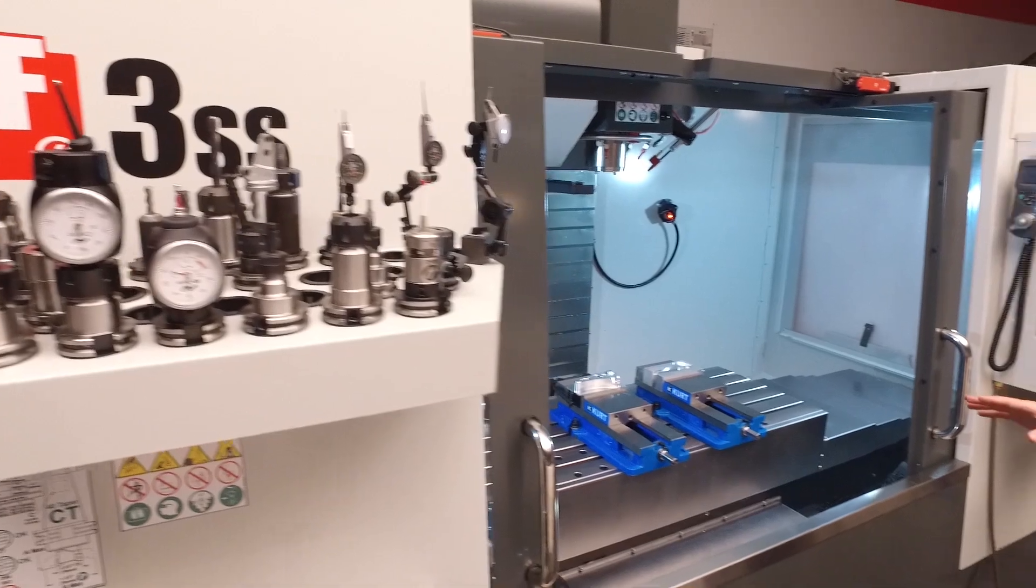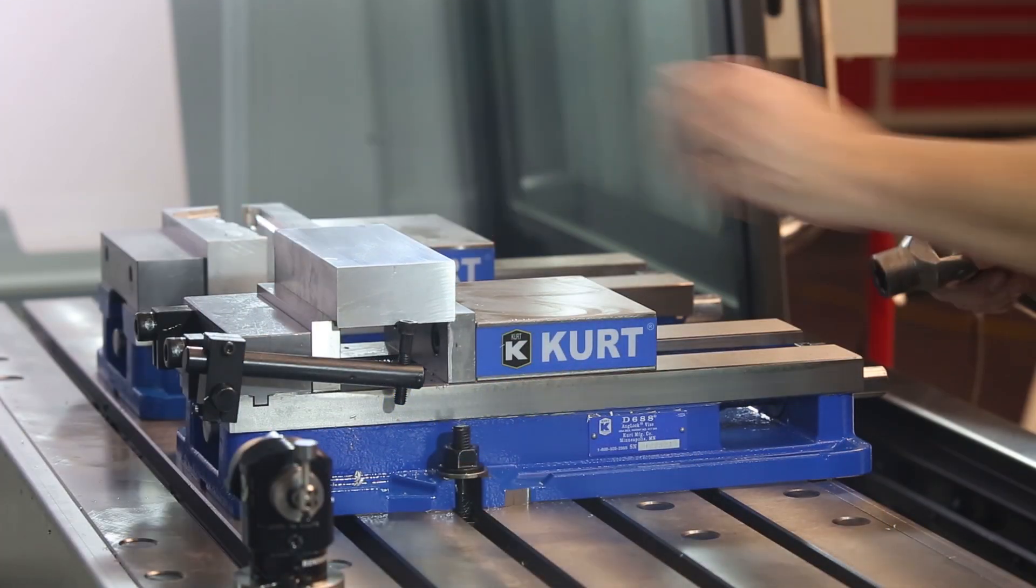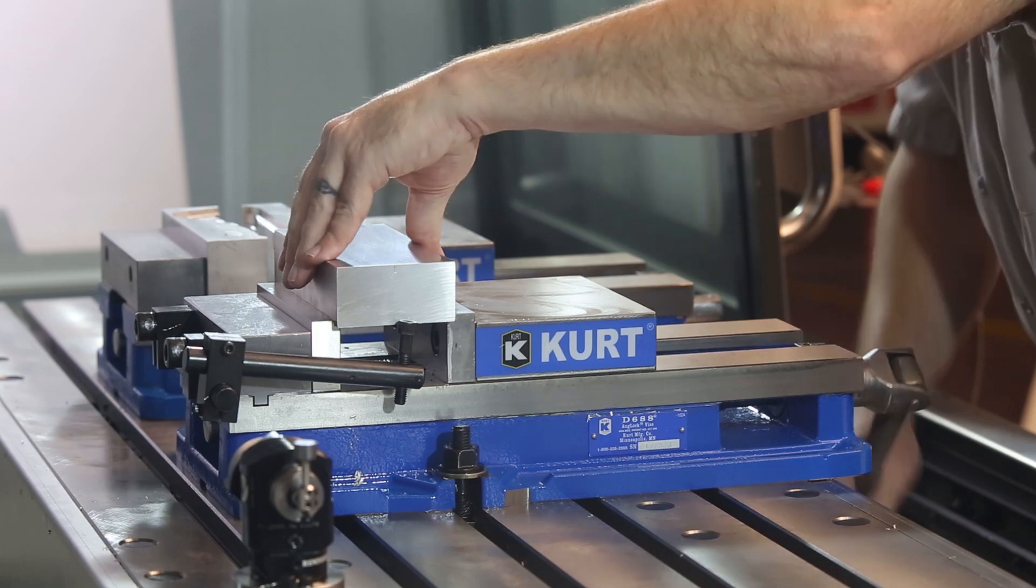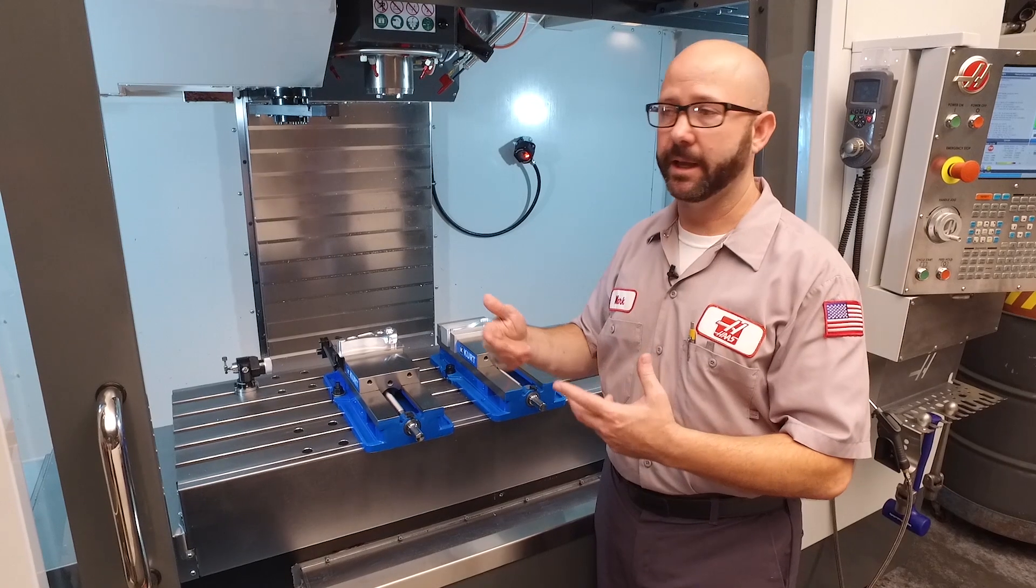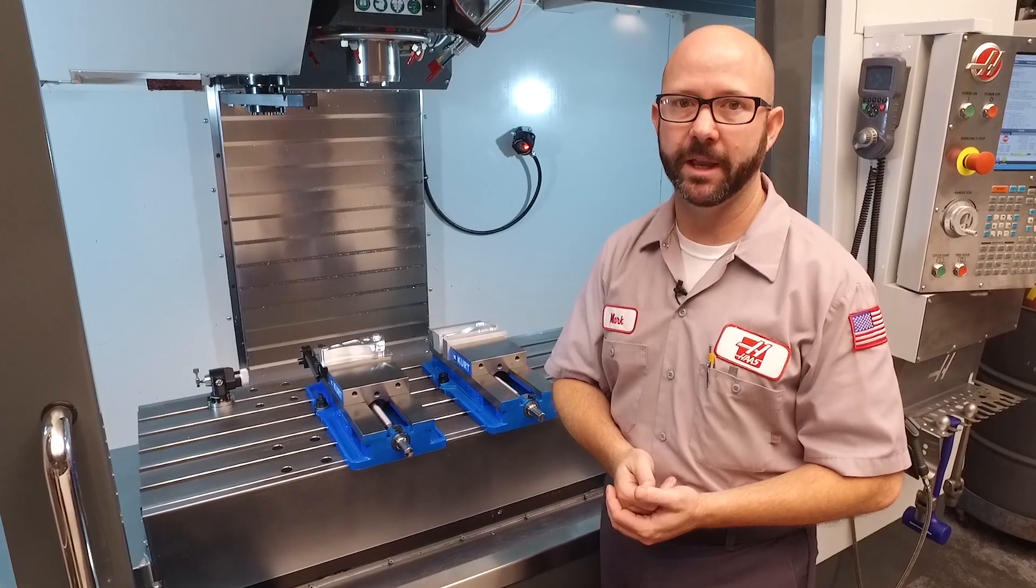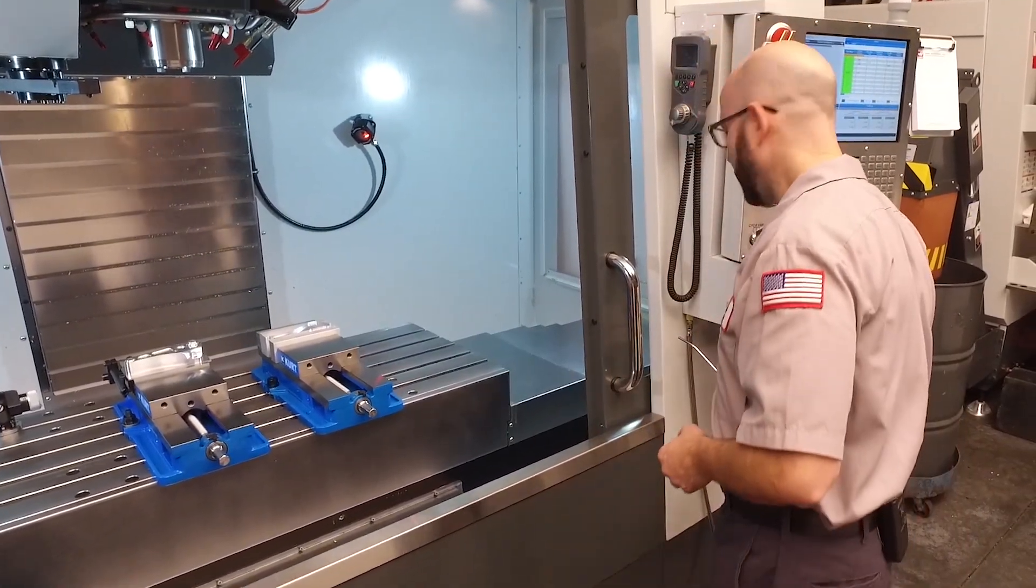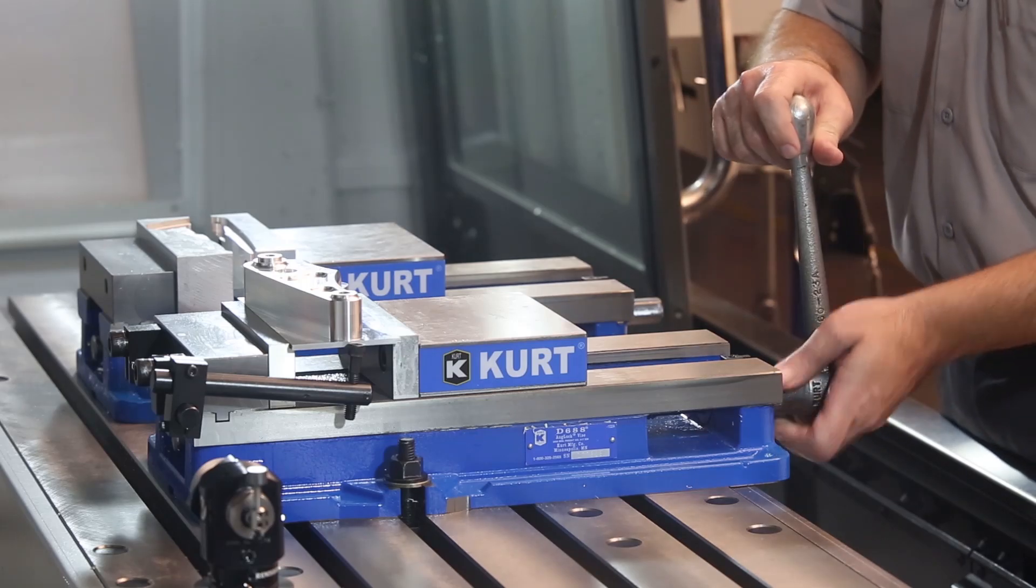Okay, so here's our part. When I set my G54 work offset on the back left corner of this square stock, I just use an edge finder or my indicator. We made an entire other video showing you how to pick up an edge, so if you need to learn how to do that, watch that other video. What we're doing right now is picking up a hole.